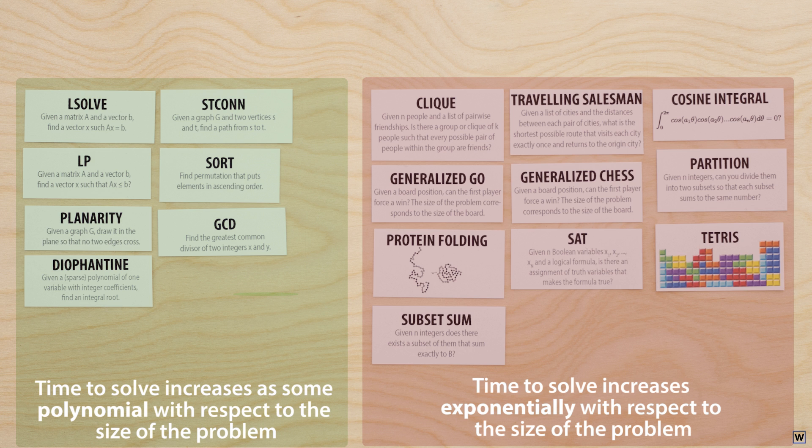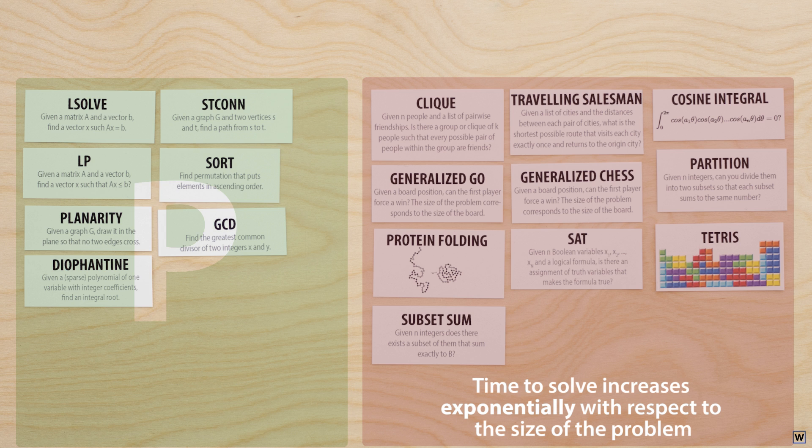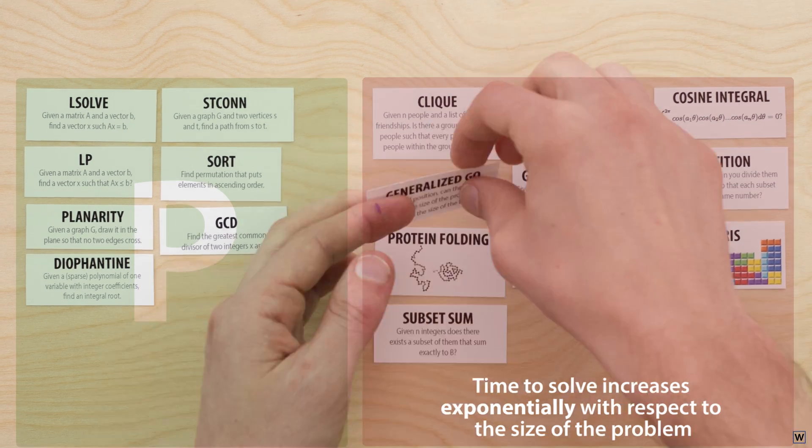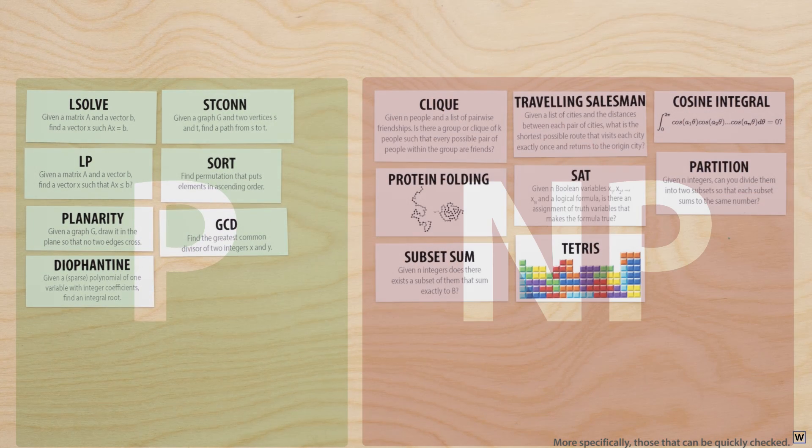This method of measuring the difficulty of a given problem has led computer scientists to categorize problems into complexity classes based on these metrics. Problems that can be solved in polynomial time are said to belong to the computational complexity class P, and many of the interesting problems that appear to only be solvable in exponential time fall into the complexity class NP.